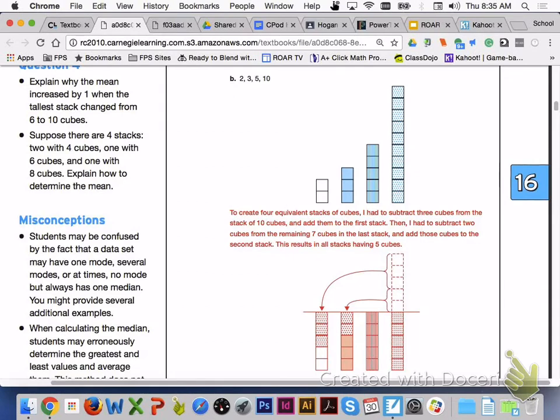And for letter B, to create four equivalent stacks of cubes, you need to subtract three cubes from the stack of ten cubes and add them to the first stack. Then, you have to subtract two cubes from the remaining seven cubes in the last stack, and add those cubes to the second stack. This will result in all stacks having five cubes. When you have all the stacks at the same value after moving cubes in a balanced manner, the stacks are balanced. The value where the stacks are balanced is called the balance point.